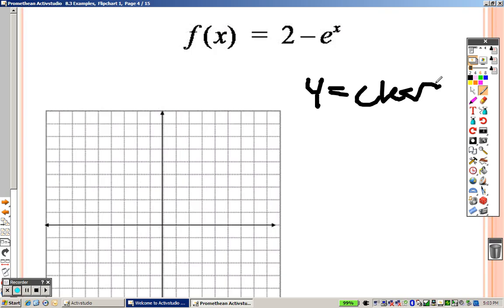It's just 2 minus, so that should be no problem. And remember, to get this, to get that, you have to do second ln.